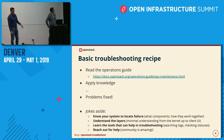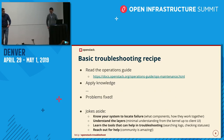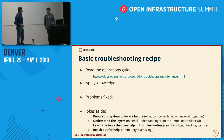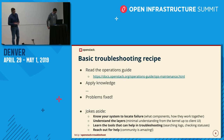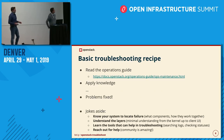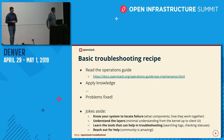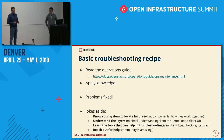I have a basic troubleshooting recipe here: just go read the operations guide, apply the knowledge, and you're done. Of course this is not how it works. When a problem arises that's already too late, so prepare for it: know your system, locate the failure, understand all these layers of what an OpenStack installation consists of, and learn the tools that can help you in troubleshooting.